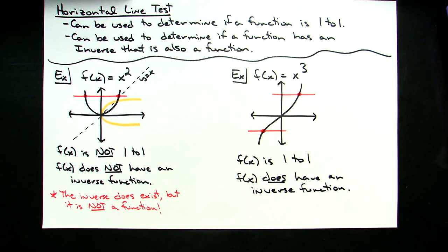So there's two examples of how you might apply the horizontal line test using a rough sketch of a function that you might be able to do.